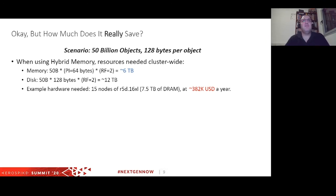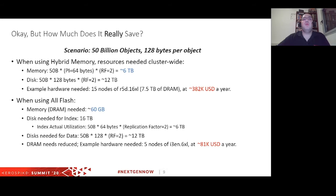So how much does it really save us? Take 50 billion records at 128 bytes per object. We'd need around 6 terabytes of DRAM for the primary index and 12 terabytes for the actual data — requiring an R5D.16xlarge instance costing about $382,000 per year. With AllFlash, we'd need only 60 gigabytes of DRAM, 16 terabytes for the index (of which only 6 terabytes are utilized), and still need the 12 terabytes for data — but on just 5 nodes of i3.en6xlarge, costing $80,000. That's a $300,000 saving.